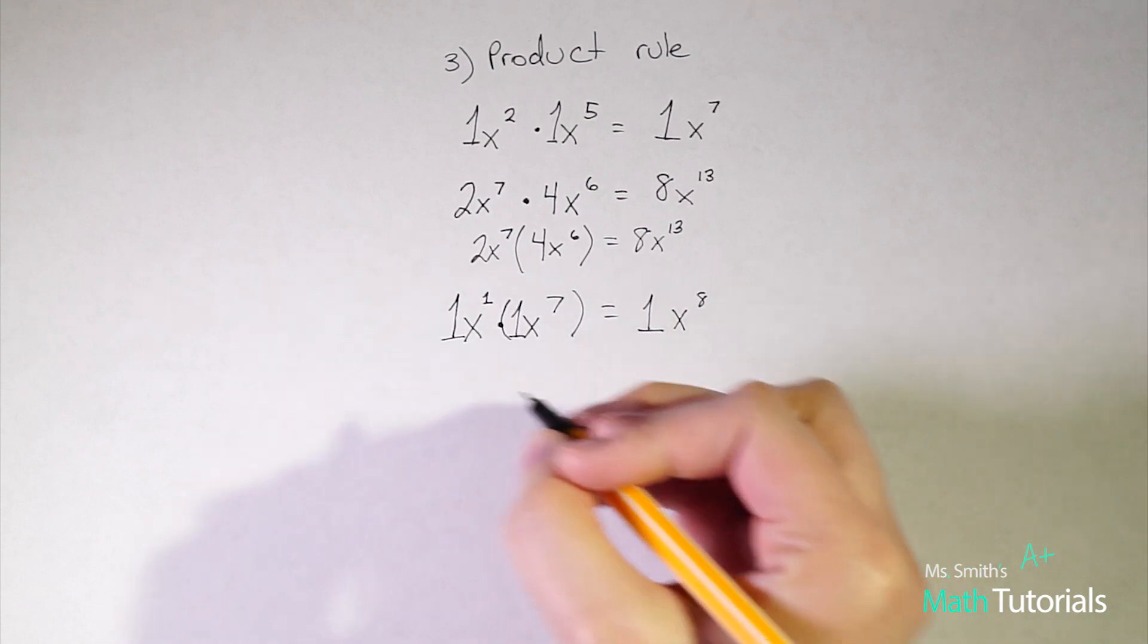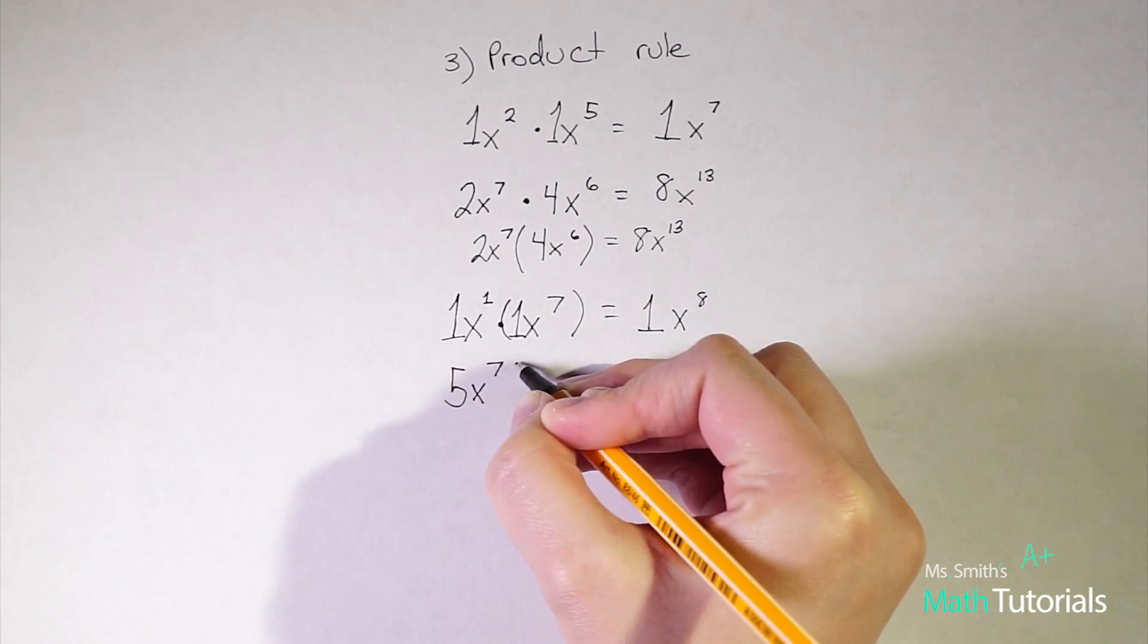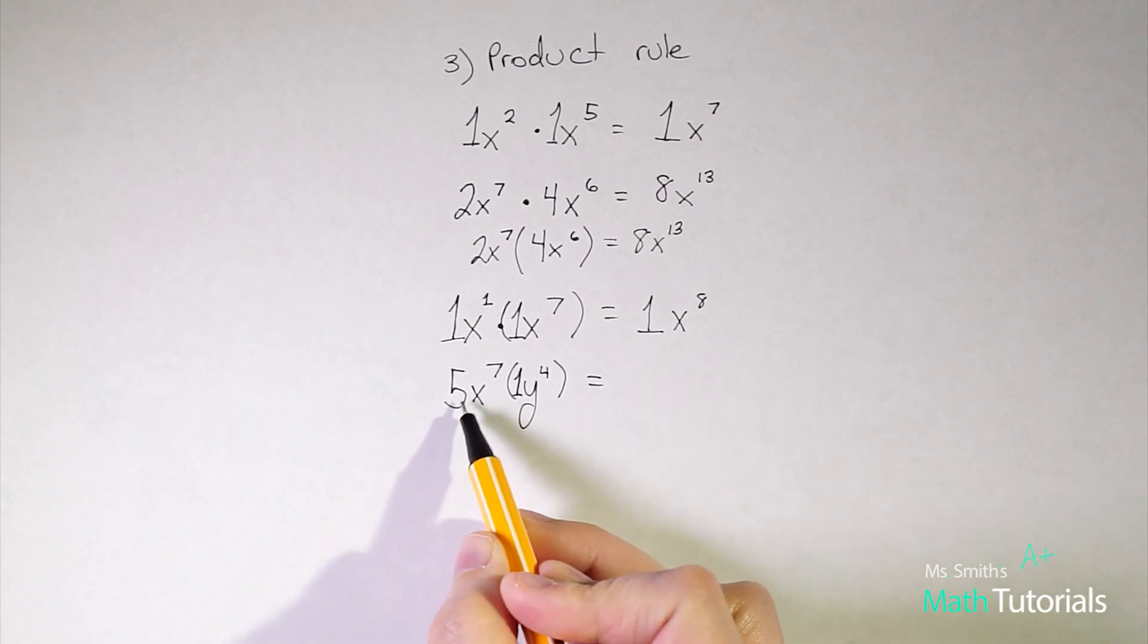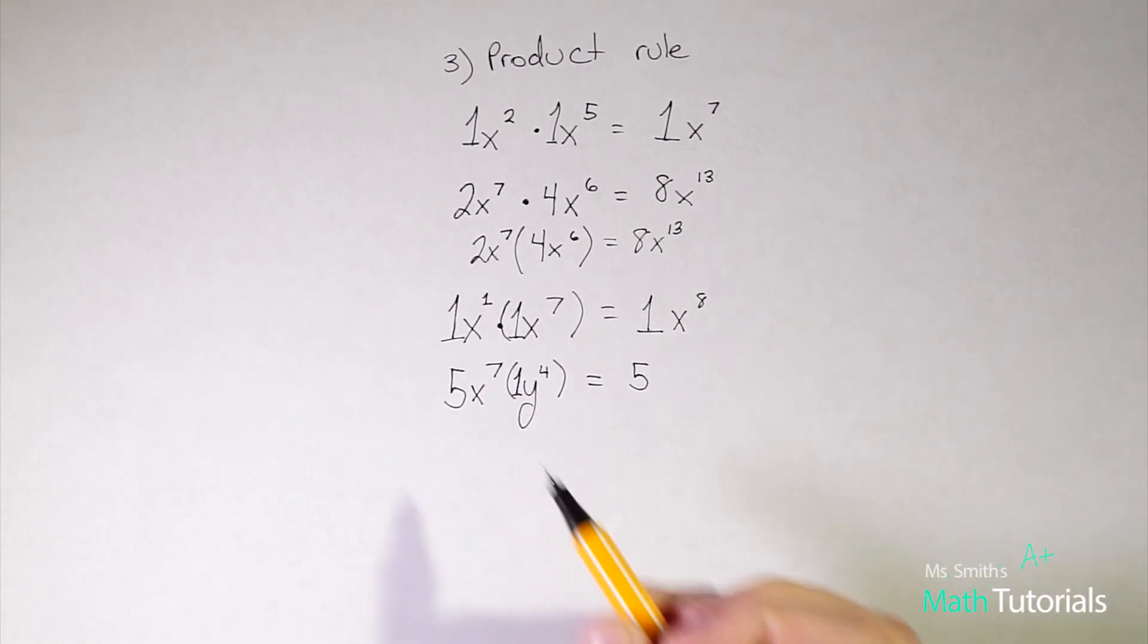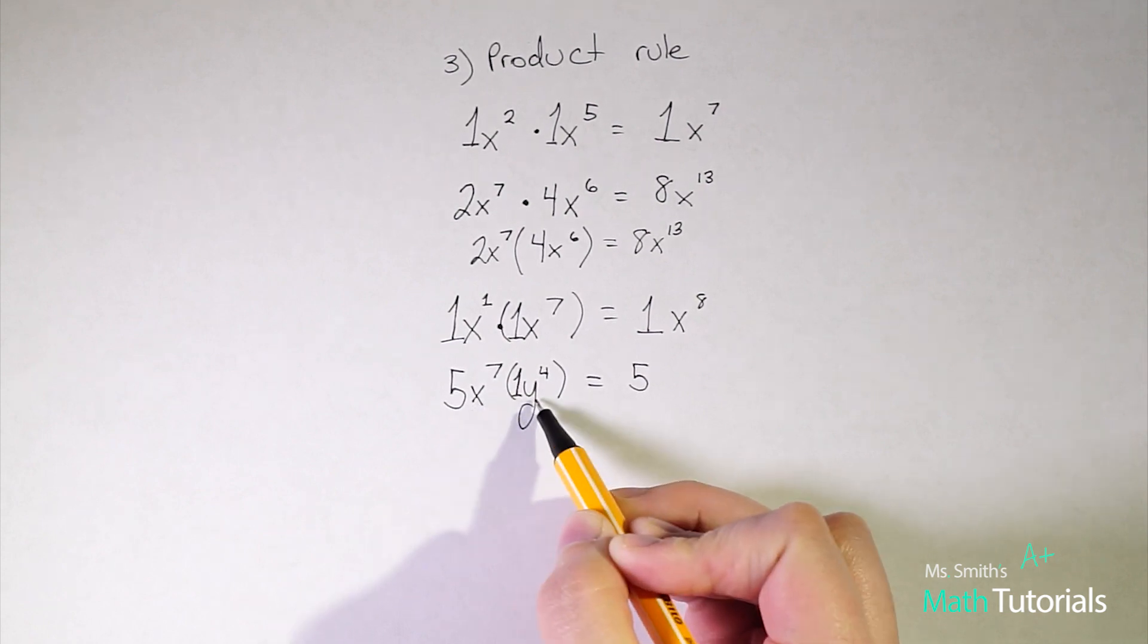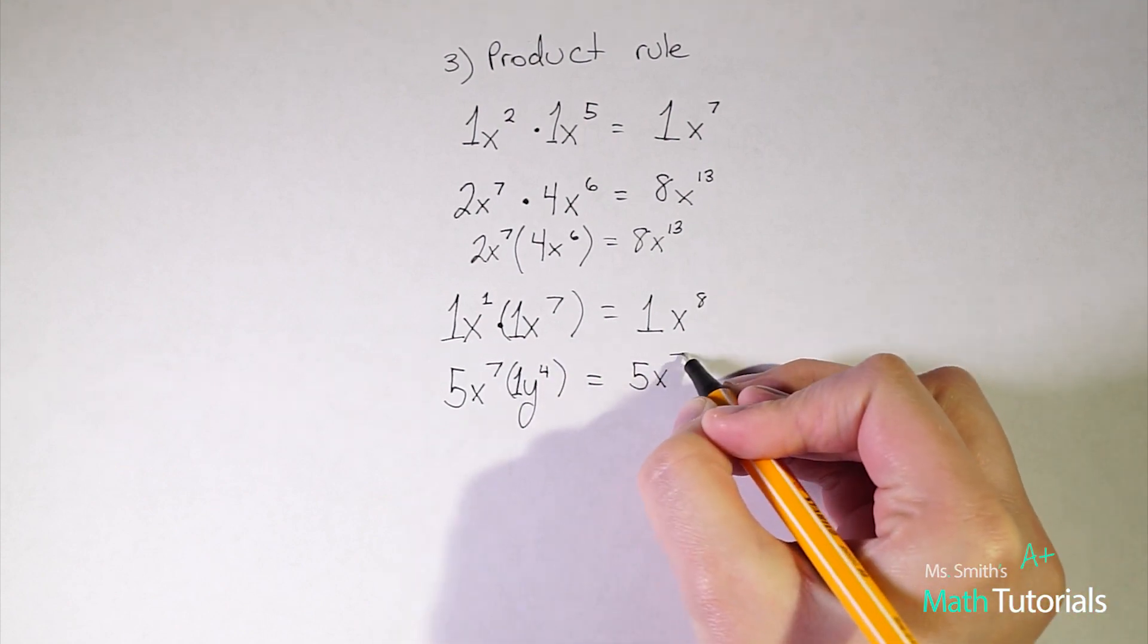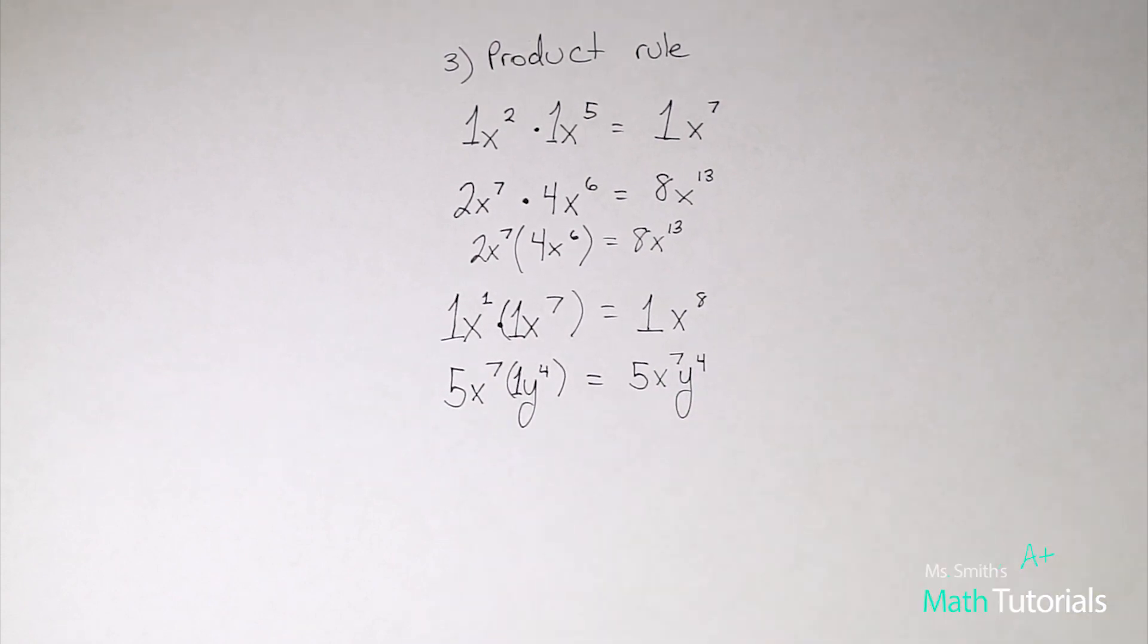The last thing I want to touch on with our product rule is let's say we were given a problem like five x to the seventh times y to the fourth. You'll notice that we do have an understood one in front of this y so we can go ahead and multiply our whole numbers. So five times one would be five. However this is an x and this is a y. They are not like bases so I cannot combine these two. I cannot do seven plus four here because they're not both x's or both y's. So that's okay we just can't combine them. So we just rewrite them as x to the seventh y to the fourth and that would be as far as we could take that problem.